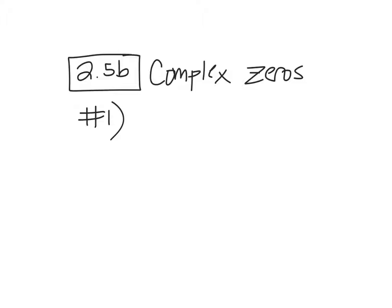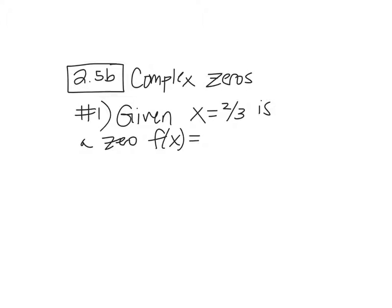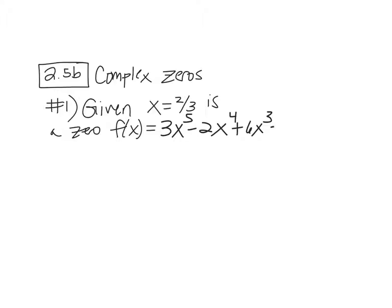All right, so I think I have like three problems and that's about it. I taught most of it yesterday. It was a lot. Okay, number one. It says here that given that x equals two-thirds is a zero of f(x) = 3x^5 - 2x^4 + 6x^3 - 4x^2 - 24x + 16, we're told that x equals two-thirds is a zero of that function.